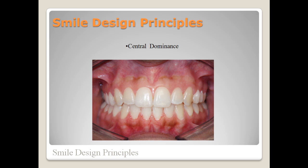First, we'll talk about central dominance. This is the most important guideline and it should be addressed first. Central dominance is the concept that the maxillary central incisors are the most important factor in creating a beautiful smile. The centrals must have the right proportions of length and width. Their position must take into account the midline, especially the horizontal plane, the amount of tooth showing at rest, the incisal edge shape, the embrasures, etc. Once you set up the central incisors with these parameters, the rest becomes easier.